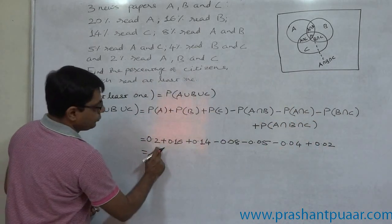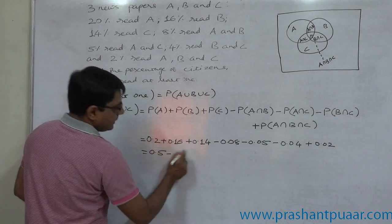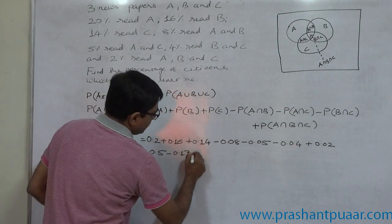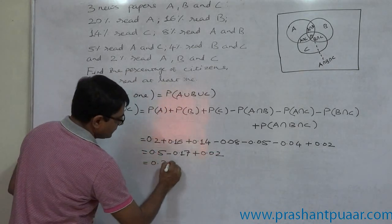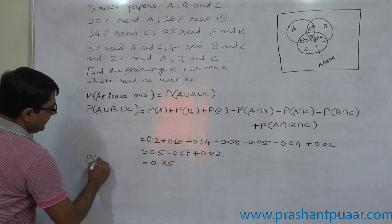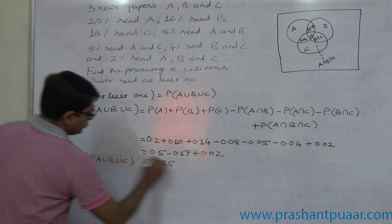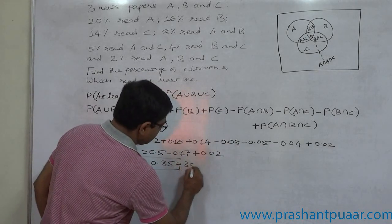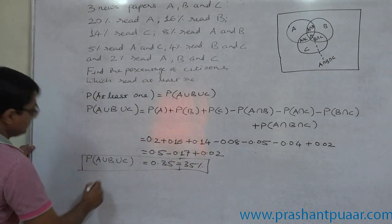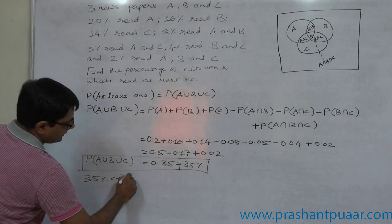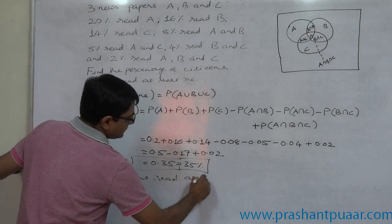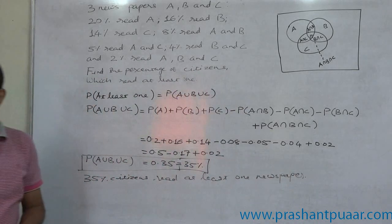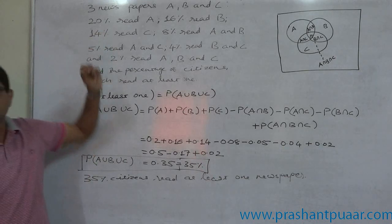So: 0.2 + 0.16 + 0.14 − 0.08 − 0.05 − 0.04 + 0.02. The simplified value is 0.35. Therefore, P(A∪B∪C) = 0.35, that is 35%. So we can say that 35% of citizens read at least one newspaper. This is the case of addition for three possible events.